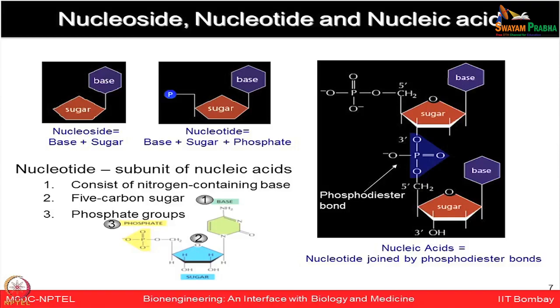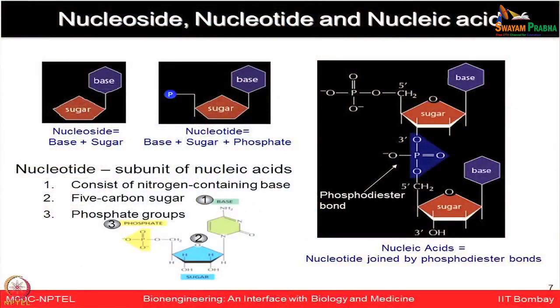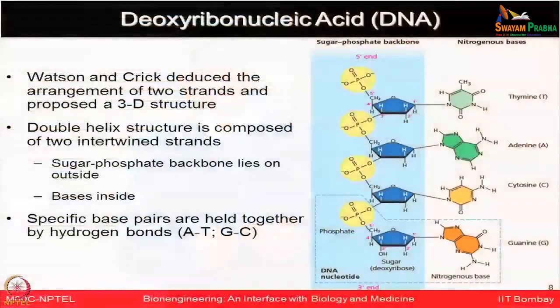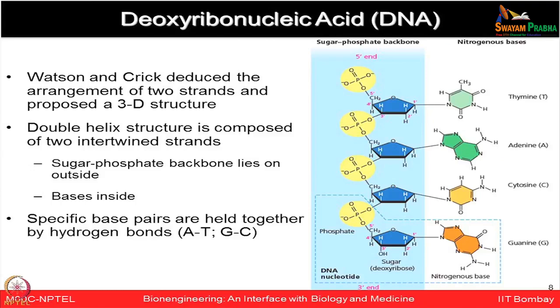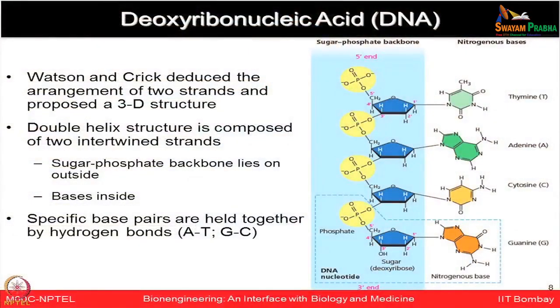A nucleotide is a subunit of nucleic acid consisting of a nitrogen-containing base, a 5-carbon sugar, and a phosphate group. Now we can easily decode the entire DNA structure. The scientists Watson and Crick get credit for deducing the double helical structure of DNA — two strands arranged in a helical form, with the sugar-phosphate backbone on the outside and the bases inside. Base pairs specifically form hydrogen bonds between A and T, and G and C.